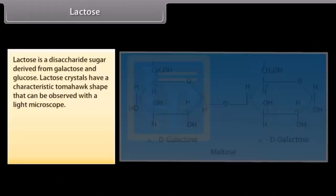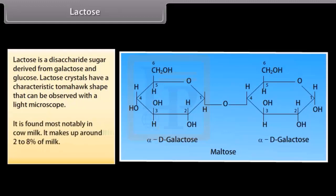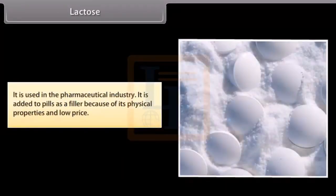Lactose is a disaccharide sugar derived from galactose and glucose. Lactose crystals have a characteristic tomahawk shape that can be observed with a light microscope. It is found most notably in cow's milk and makes up around 2–8% of milk. It is used in the pharmaceutical industry and is added to pills as a filler because of its physical properties and low price.